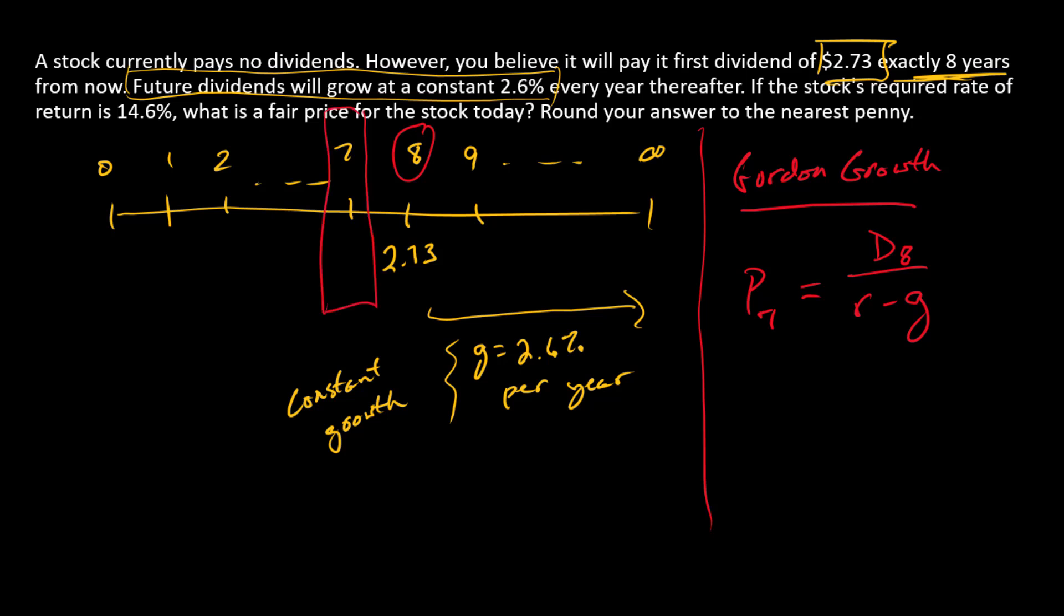The first step is to find the price at time seven. So we know that P7 is equal to $2.73 divided by the discount rate, which is 14.6%, minus the growth rate of 2.6%. Okay, so there's our first step. So let's go ahead and solve for that price. That price at time seven is $22.75.